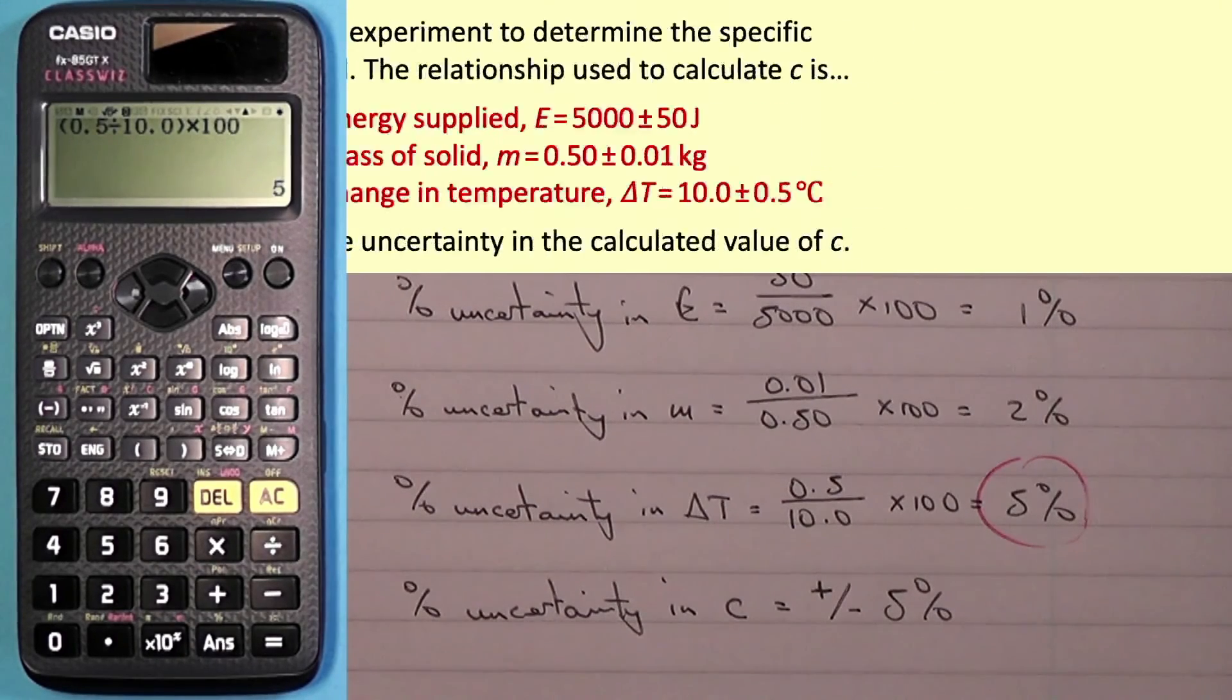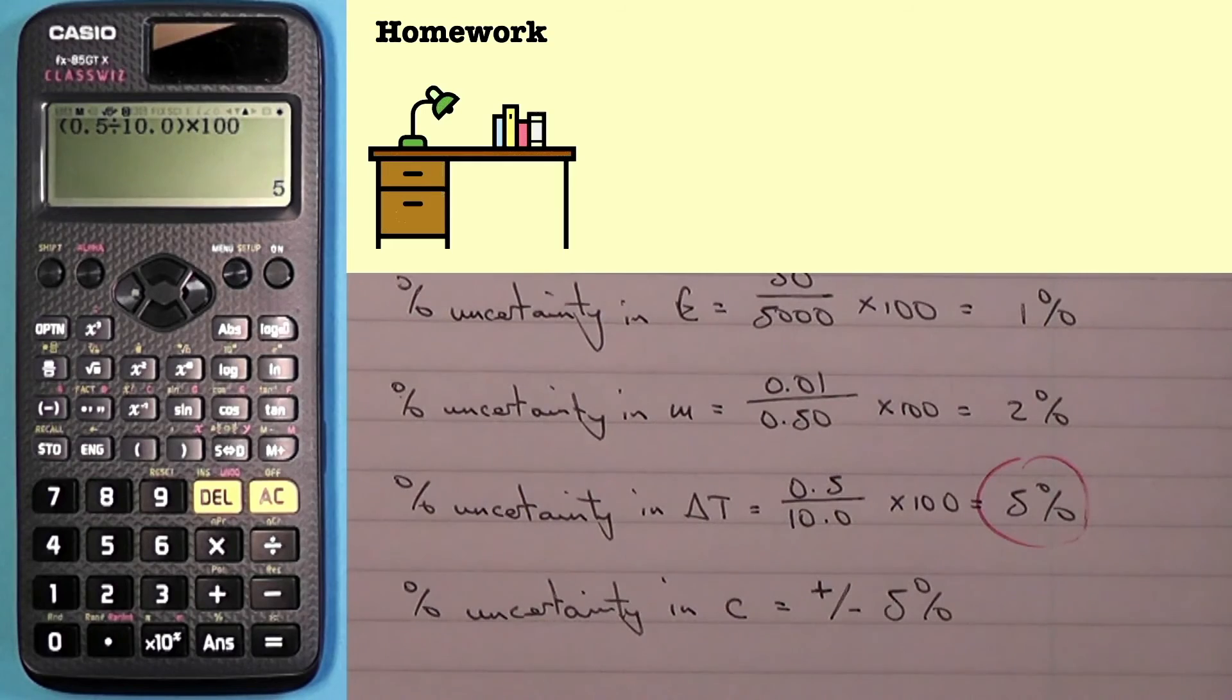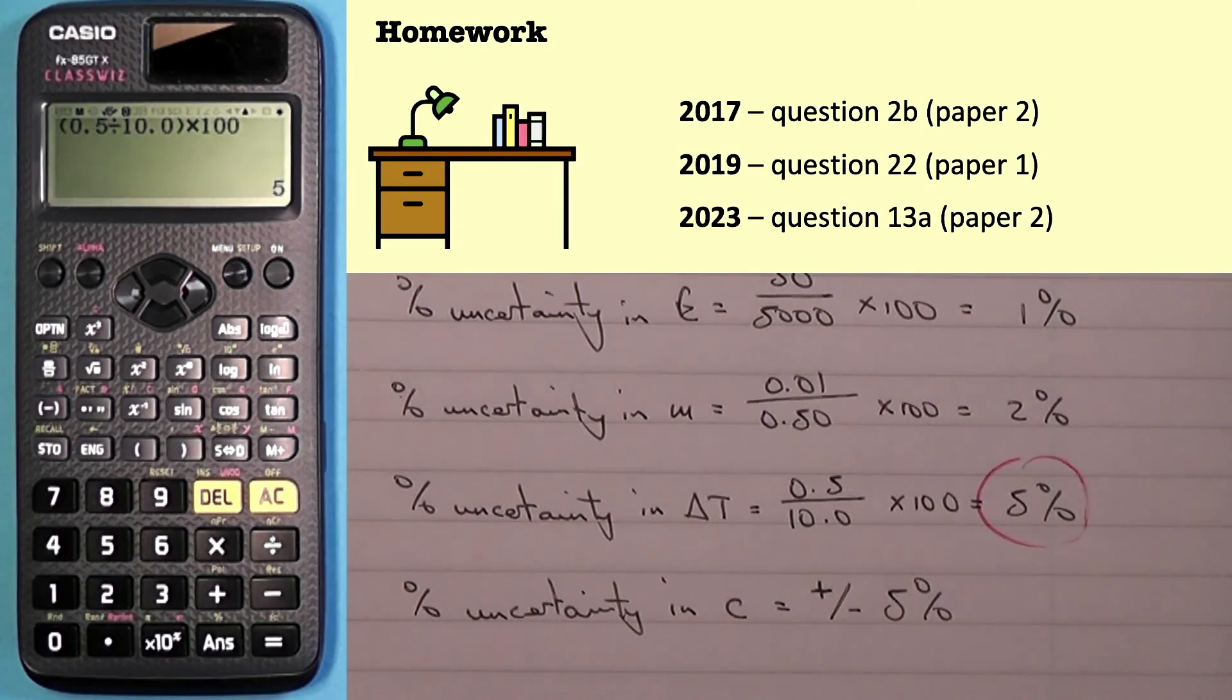The last thing I'll do is show you some past paper questions which you might like to try. The three questions I've lined up are: from the 2017 paper, paper number 2, the written paper, question 2B; from the 2019 paper, paper 1, that's multiple choice, question 22; and finally from 2023 paper 2, question 13A.